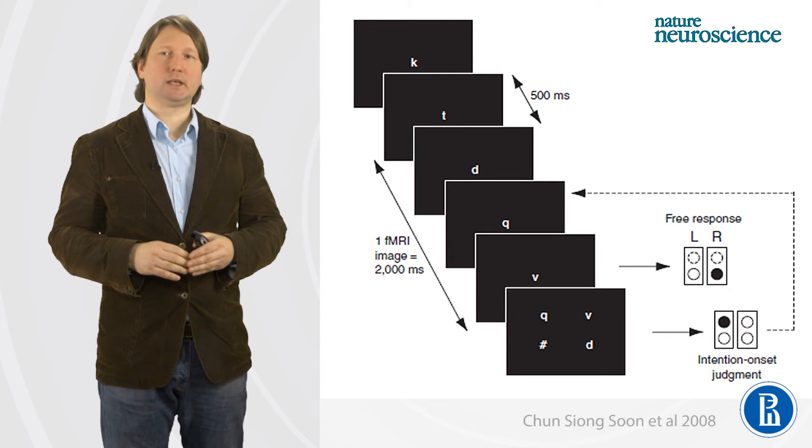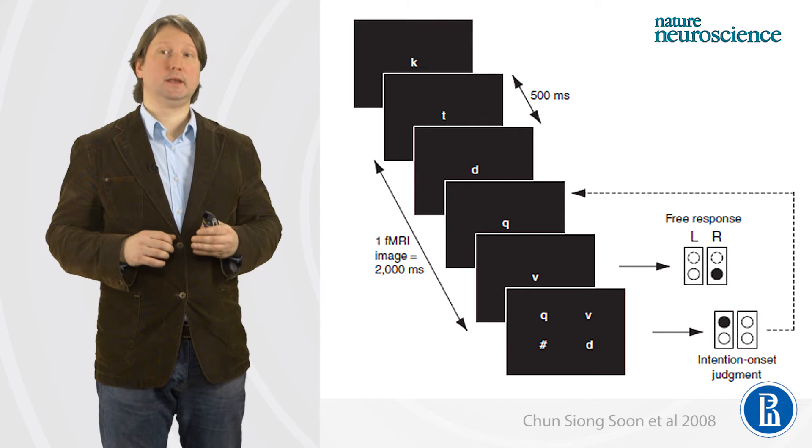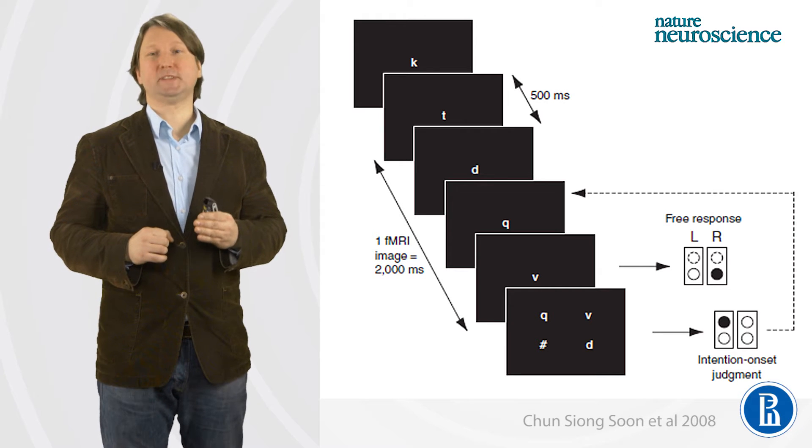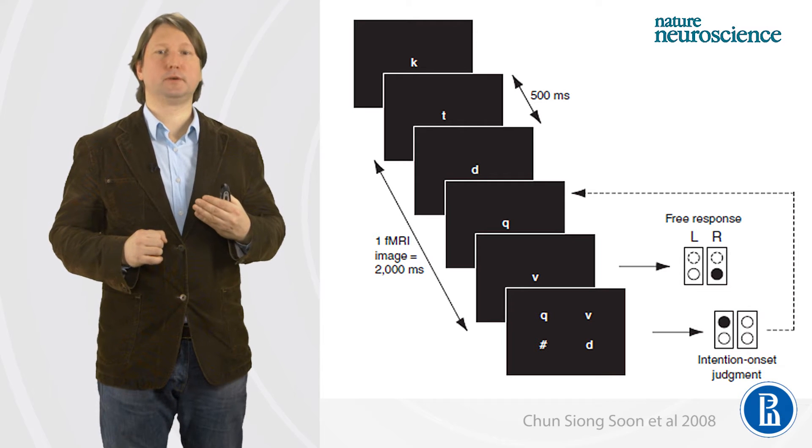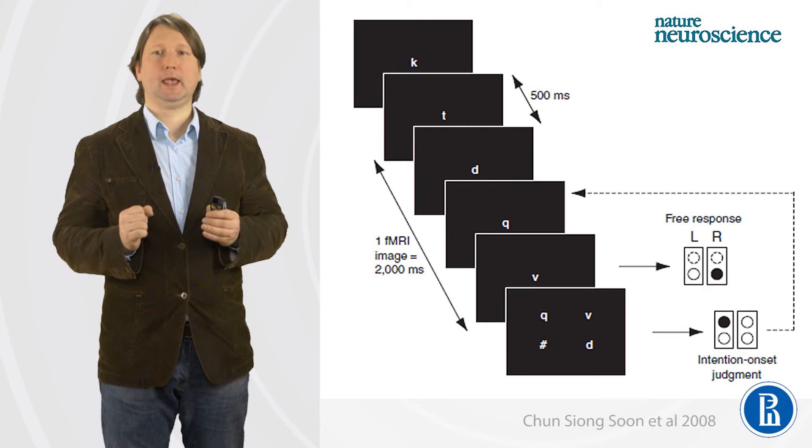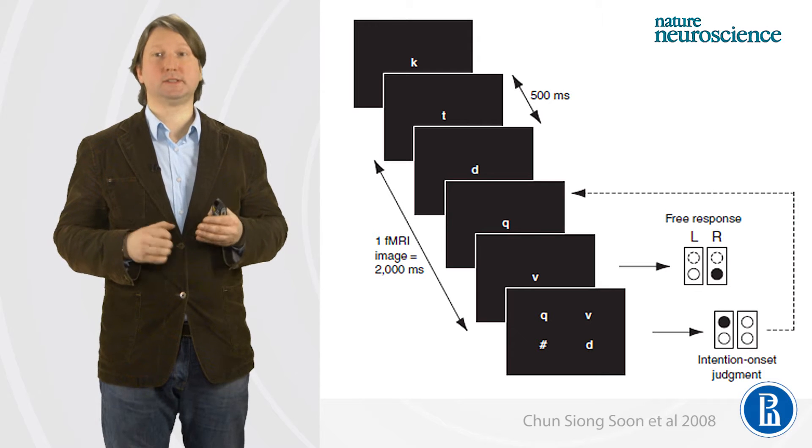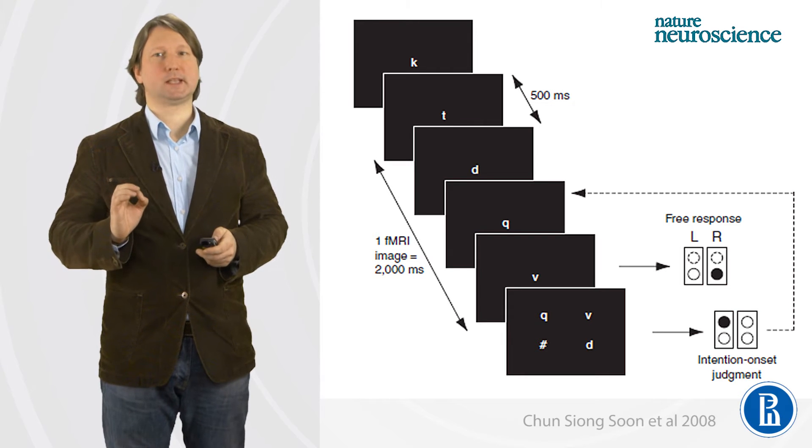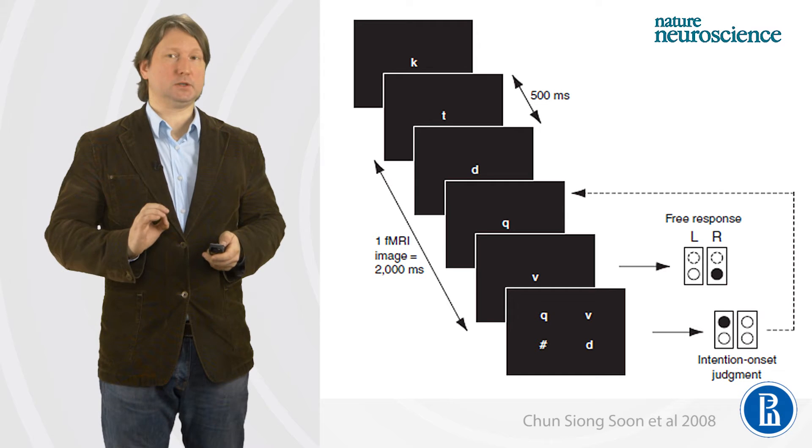Basically the same paradigm was used. Subject could see on the screen a stream of letters and subject has to move finger, but she has to remember the letter on the screen that is presented at the same time when subject is aware of their intention to move finger. At the end of the trial, subject is exposed to the matrix of letters, and on this matrix, she has to indicate which letter corresponds to the onset of their decisions. With this technique, we can detect at which moment subject became aware about their intention, her intention to make a movement.